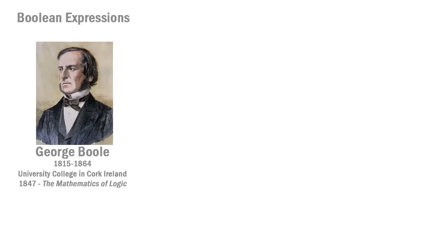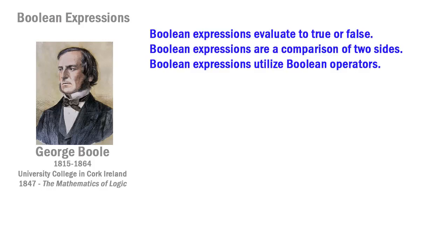Boolean Expressions are named after the mathematician George Boole, who in the mid-19th century was a mathematics professor at University College in Cork, Ireland. In 1847 he wrote a book called The Mathematics of Logic, in which he expressed the concept of comparisons between two sides of an equation evaluating to either true or false.